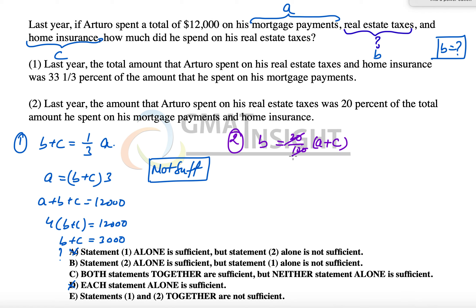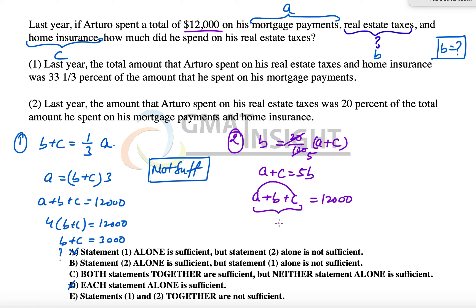This gives us concrete information, because from here we get A plus C equals 5B. We already know that $12,000 is the sum of A plus B plus C. Substituting A plus C equal to 5B, the entire summation becomes 6B — that is B plus 5B — which equals $12,000.